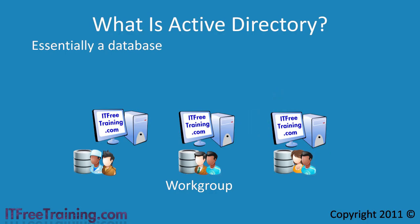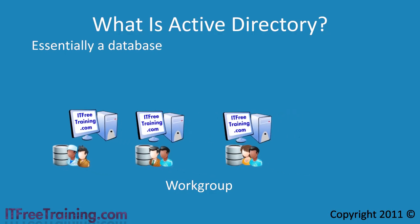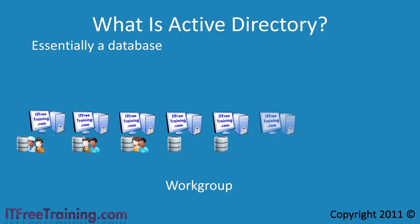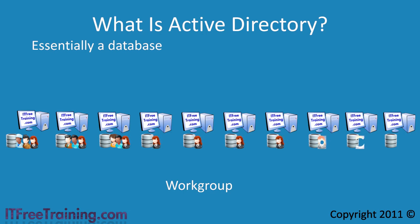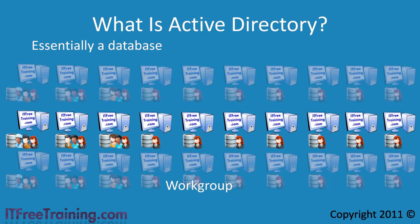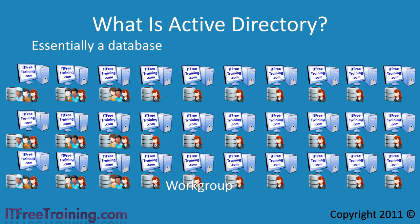This presents two problems. First, it does not scale well. When you have a small network with only a few computers, you can keep this under control without too much administrative effort. But imagine if your network grew to 10 computers — each time a new person needs access or an old person needs to be removed, you would need to visit each of the computers affected by that change. Now imagine you have 50 or 100 computers. You can see that this quickly becomes unmanageable.